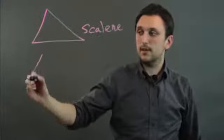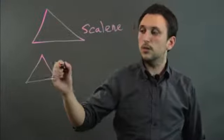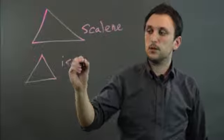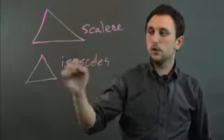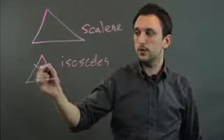Then we can have isosceles, which would be two sides being equal, exactly two, so we'll say this one and this one.